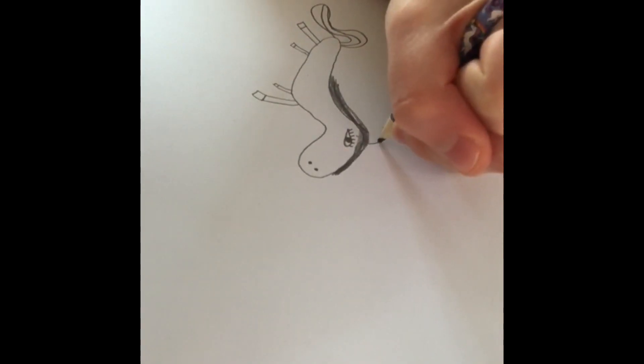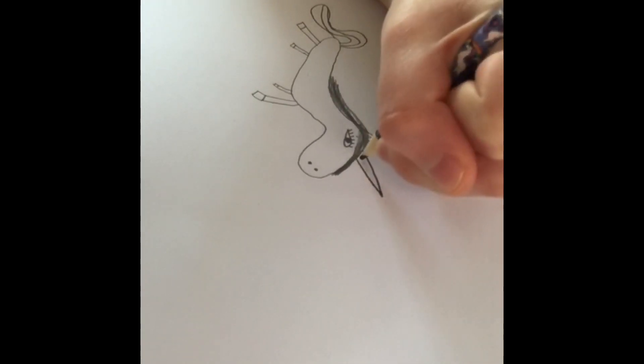For ears, if you draw a triangle within a triangle then it adds extra effect. And every unicorn needs a horn.